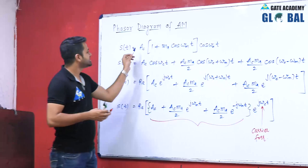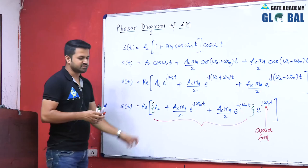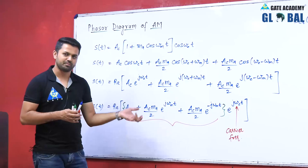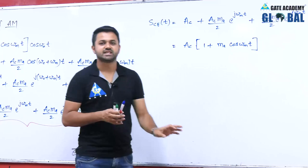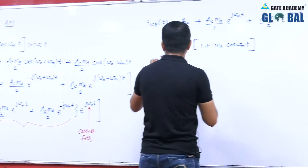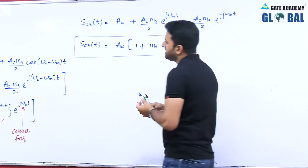That is why we call this term the complex envelope — because when we represent this band-pass signal as the real part of some term into the carrier term, the coefficient is known as the complex envelope. So Ac(1 + Ma·cos(ωmt)) is the envelope, or more precisely the complex envelope of this AM signal.